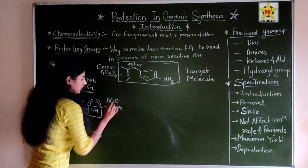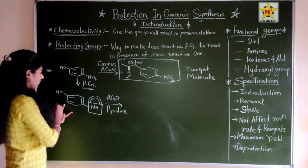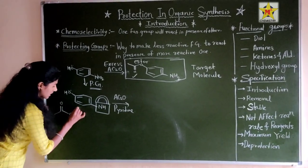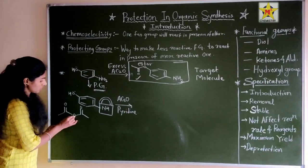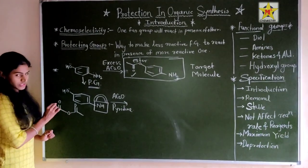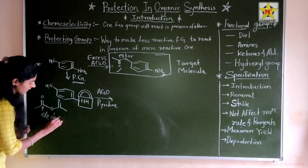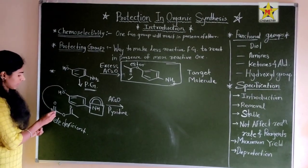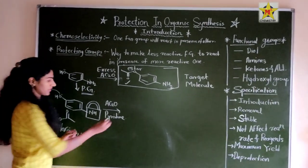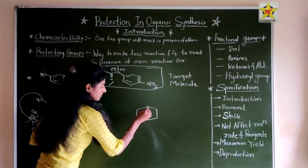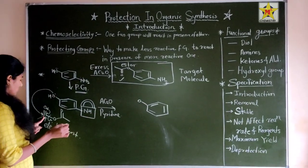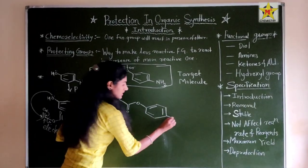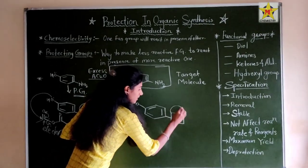Now we add Ac₂O (acetic anhydride) in the presence of pyridine. Acetic anhydride has a carbonyl carbon attached to two oxygen groups, making it electron deficient. Any nucleophile will attack that carbon. The free OH group acts as the nucleophile, attacking the carbonyl carbon and forming an ester (C=O with R group). The NH₂ remains protected as it is.